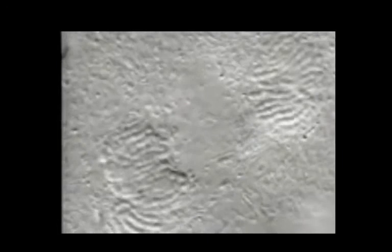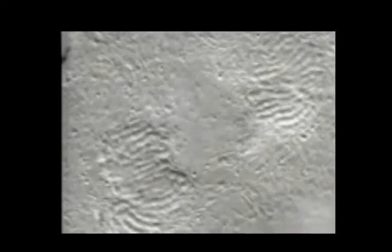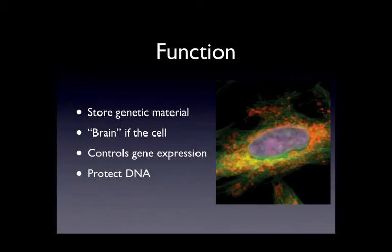Chromosomes are responsible for carrying the hereditary information from one generation to the next. The nucleus has four major functions: storing genetic material such as DNA, and acting like the brain of the cell, controlling all of the functions of the individual organelles surrounding the nucleus.